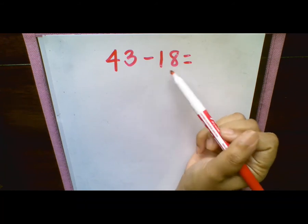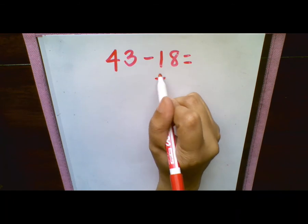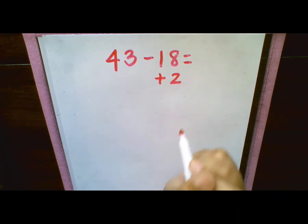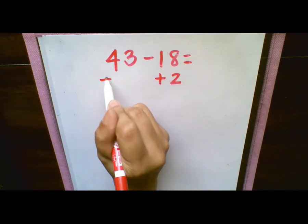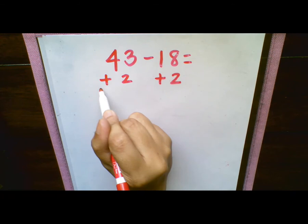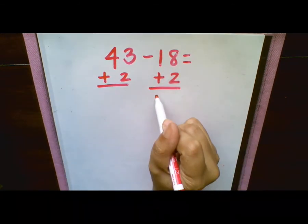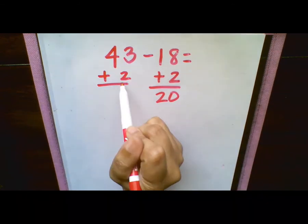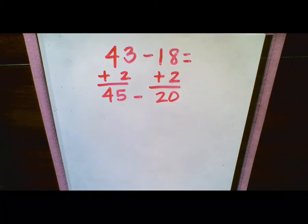So in order to make this number a 10, we know that we need to add 2 to it. So with compensation, whatever you do to one side, you have to do the exact same to the other side. So I added 2 to this side, so I'm going to go ahead and have to add 2 to this side as well. So now we have 18 plus 2, which is going to give us 20. And then we have 43 plus 2, which is going to give us 45.